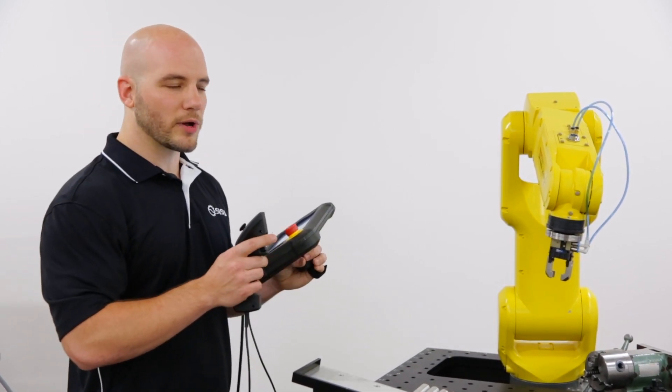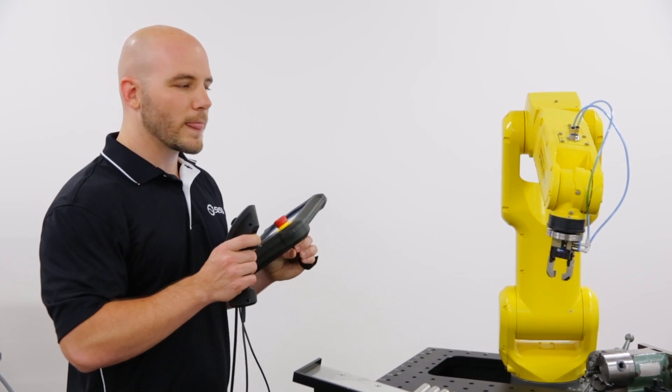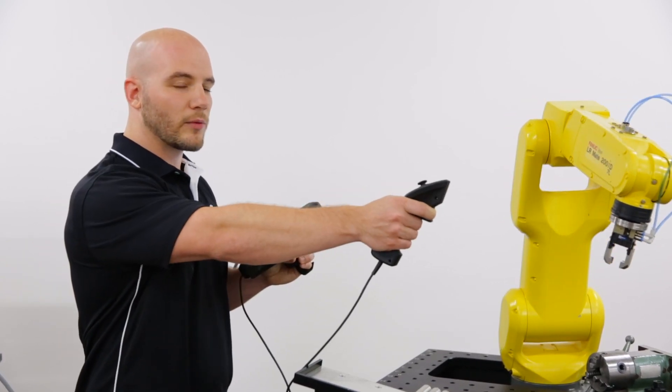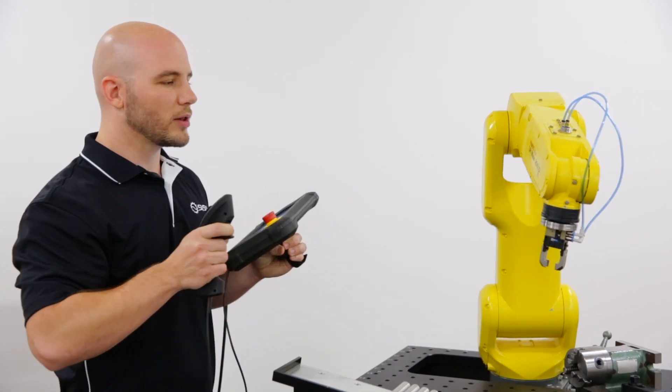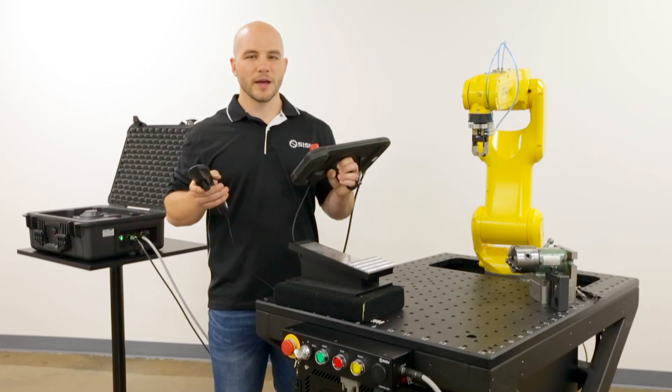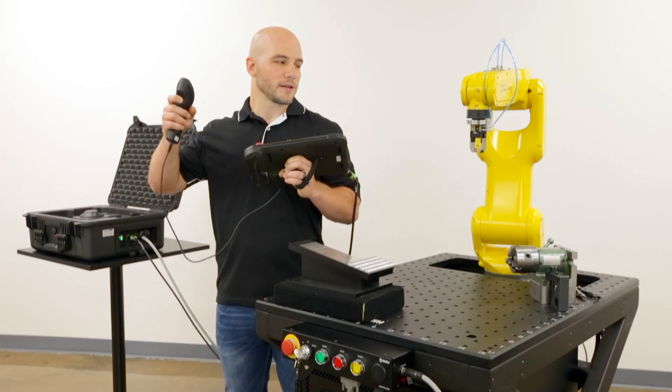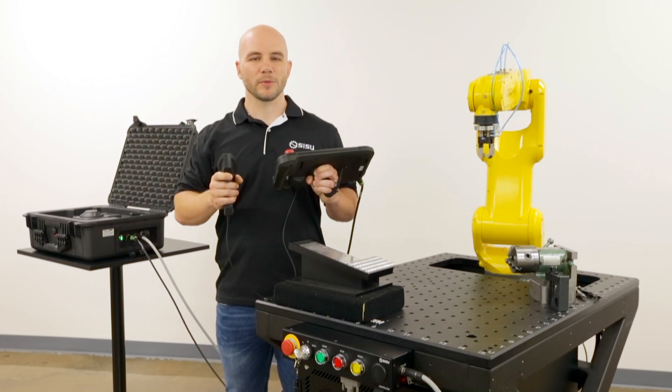If I stand facing the robot and I want the end effector to move away from me, I push it away. If I want it to come closer, I pull it closer. It really doesn't matter in what orientation I stand, the robot will follow, and I never have to think backwards.